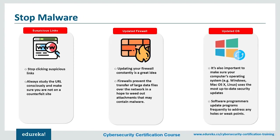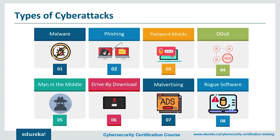How do you remove malware? Each form has its own infection method and requires a different removal approach. The best way to prevent malware is to avoid clicking links or downloading attachments from unknown senders. Deploy a robust, updated firewall to prevent transfer of large suspicious data files. Also, keep your operating system — whether Windows, macOS, or Linux — updated with the latest security patches to decrease system weaknesses.